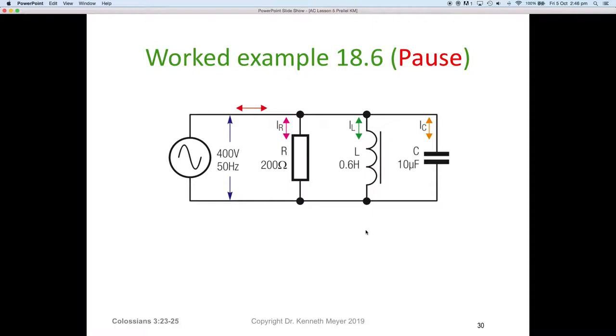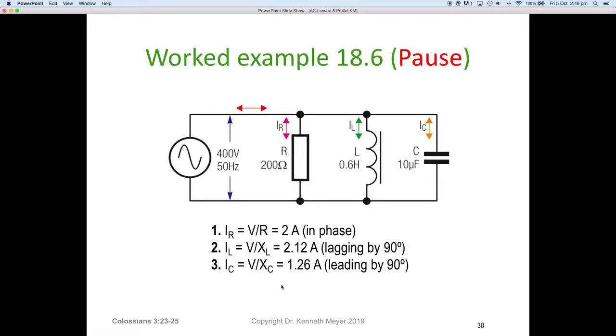Okay, I'm hoping you're back now. The current through the resistor was pretty easy: voltage divided by resistance, so 400 volts divided by 200 ohms equals 2 amps, and the phase angle is zero or in phase. The second one, we work out the XL for the inductor, take the applied voltage divided by XL, and you should have got 2.1 amps lagging by 90 degrees. Then voltage through the capacitor divided by Xc, using 1 over 2πfc, gives 1.26 amps.